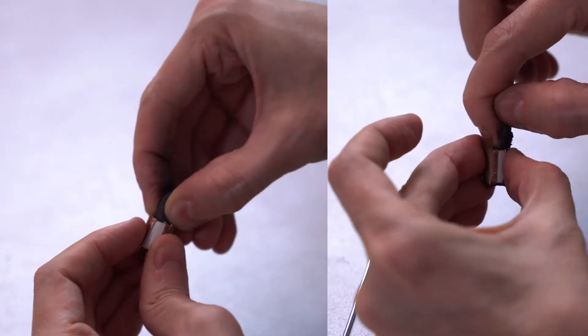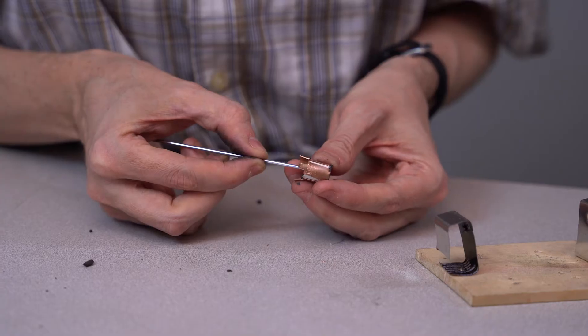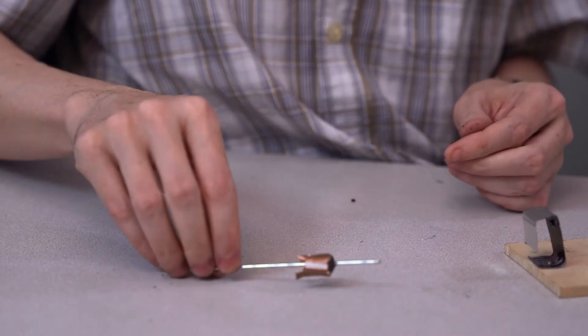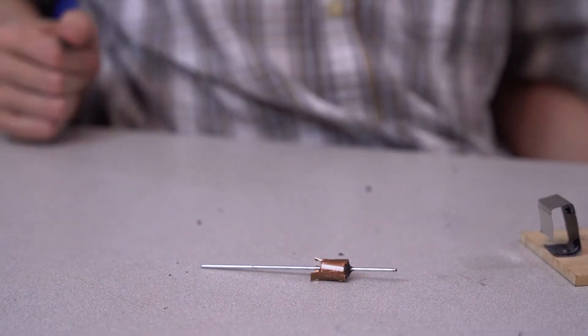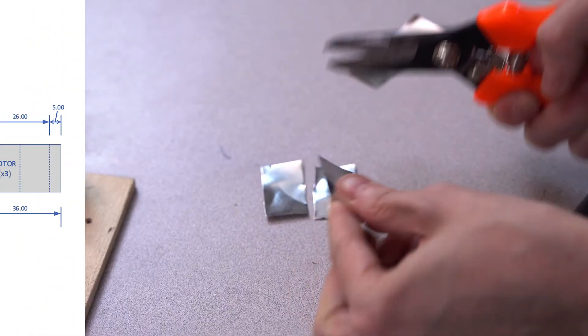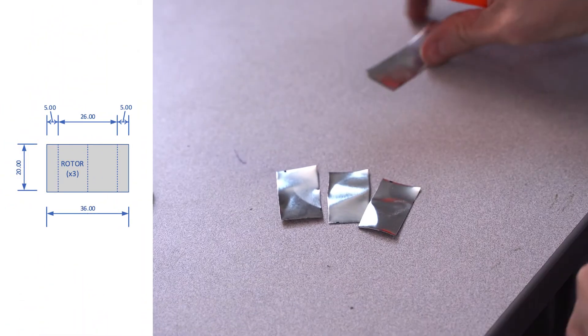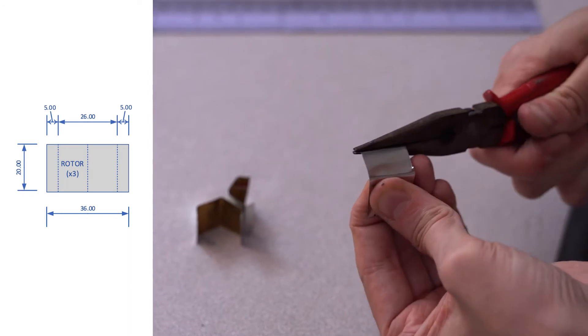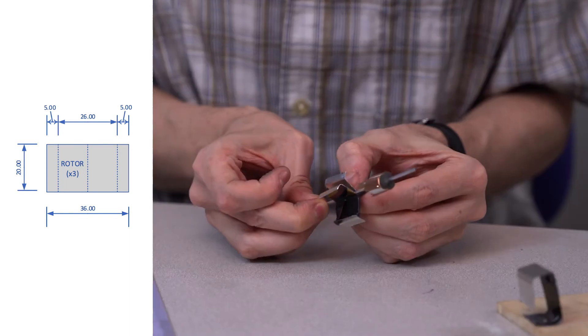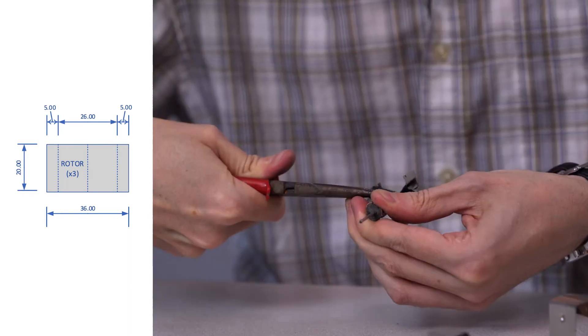Then we'll use epoxy putty, run the shaft through the center of the putty, and let the epoxy dry. We're going to need 3 strips of metal, 3.6 cm long, and 2 cm wide, bent in the middle by 60 degrees so that they all fit back to back to make the 3-poles.